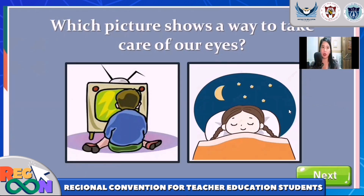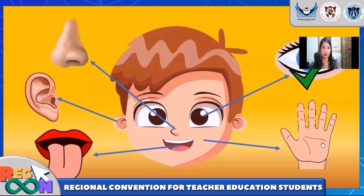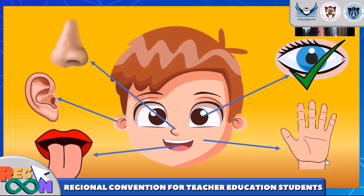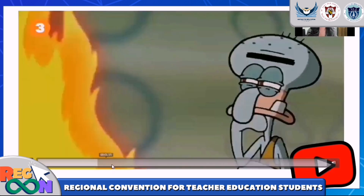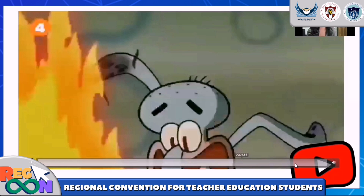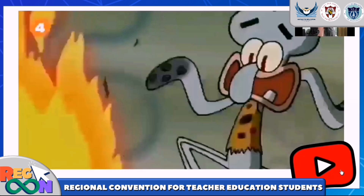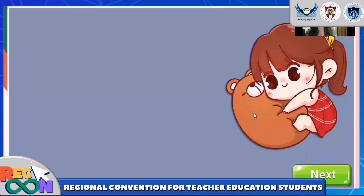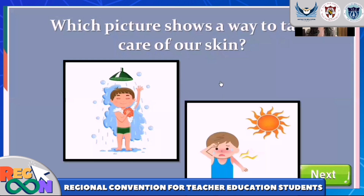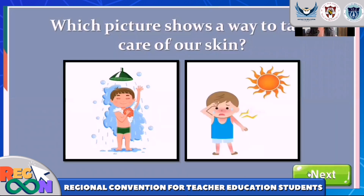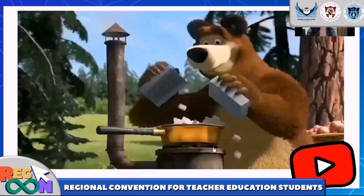Click the next button and it will lead you to the next sense organ. Ask the kids which sense organ they want to choose. Same as with the eye — a video will come out, then ask the students about it. After asking, click the red button, then discuss the function, and discuss how to take care of that sense organ.